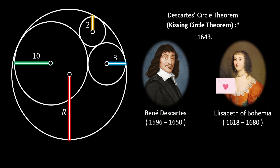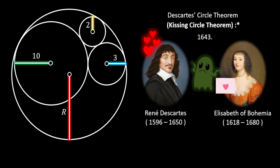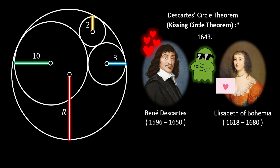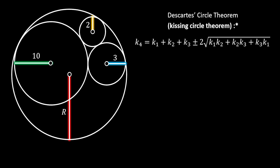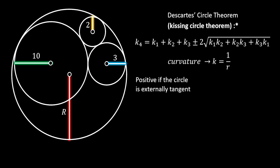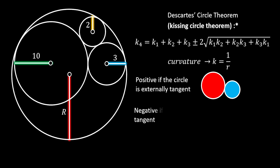This all happened in 1643 — quite an unusual way to impress a lady. I don't know if Miss Elizabeth was impressed with this theorem, but I sure am. Who says that mathematicians aren't romantics? So if we were to open this letter, we would find this beautiful circular theorem. The variable k stands for curvature of a circle, which is the reciprocal value of the radius. You use the positive value if the circle is externally tangent — imagine three coins touching each other — and negative if the circle is internally tangent, like one circle inside another.